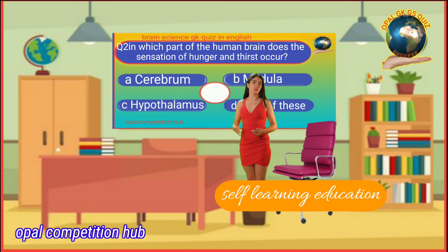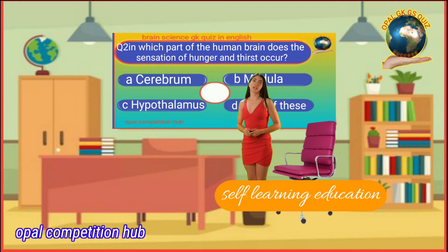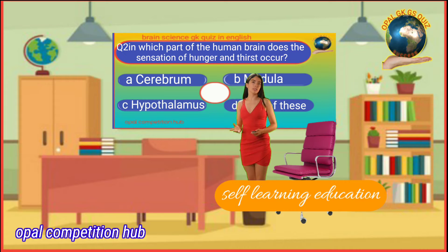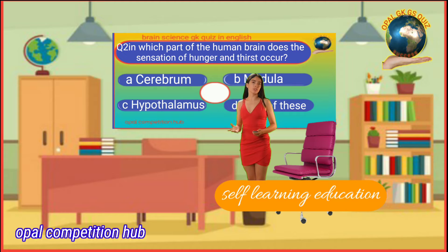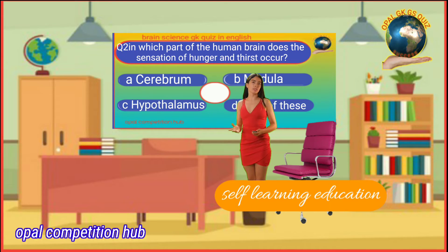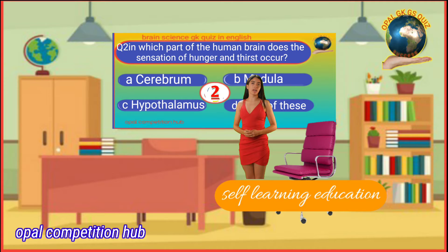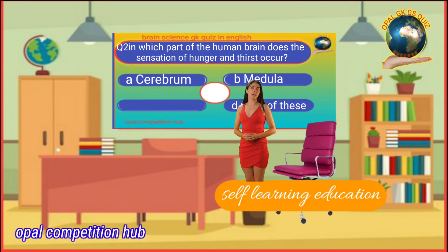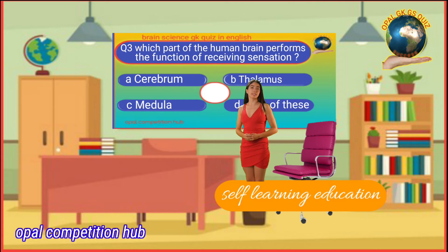Question number 2: In which part of the human brain does the sensation of hunger and thirst occur? Option A: Cerebrum. Option B: Medulla. Option C: Hypothalamus. Option D: None of these. Your time starts now. Your answer will be Option C: Hypothalamus.